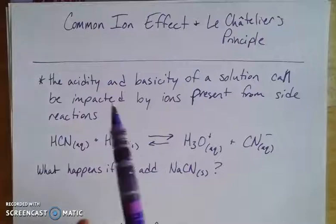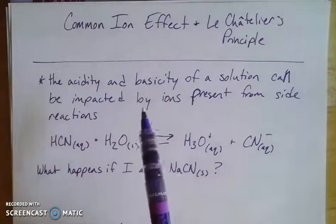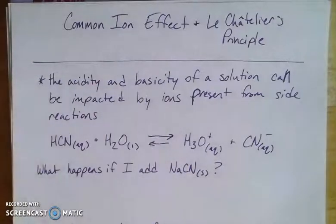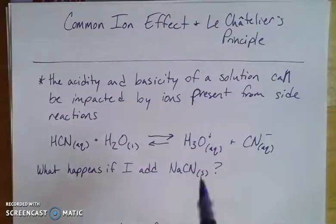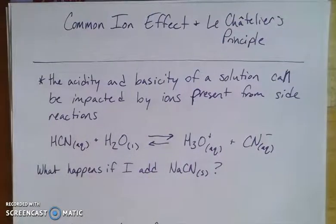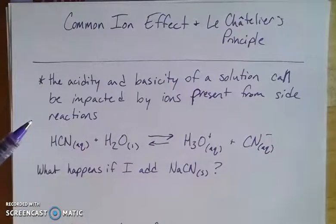If we have ions that are in solution, those ions are going to impact the equilibrium. They do that by affecting either the rate of the forward reaction or the rate of the reverse reaction. And depending on what's on either side of those reactions, it's going to impact the acidity and basicity of the solution. That's really what the common ion effect is all about, and this leads into topics like buffering systems.